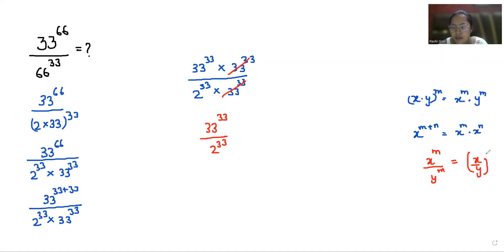x by y whole power m. So it becomes 33 by 2 whole power 33. 33 by 2 equals 16.5 whole power 33. I hope it's clear and you find it useful, so please give us a thumbs up and subscribe to my channel.